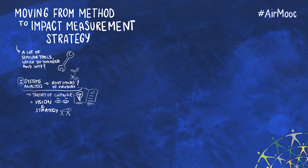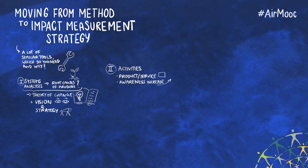In a second step, ventures define and clarify their activities, which usually comprise many things. It could be the provision of a service or the manufacturing of a product, but also awareness raising activities by which the venture wants to create social change.